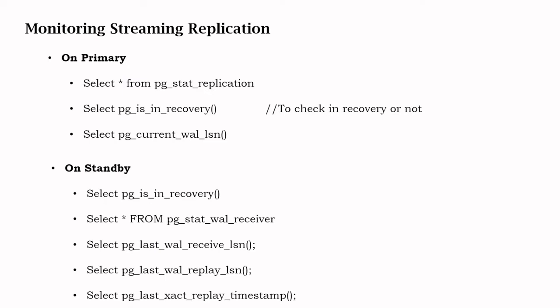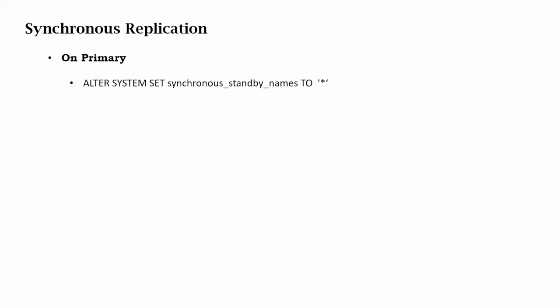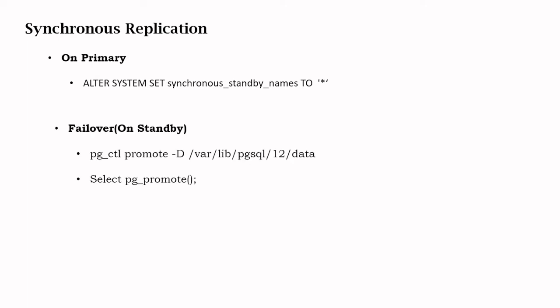There is also a command that gives the timestamp of when the last WAL log was applied. By default Postgres uses asynchronous replication. If you want to convert to synchronous replication you can use ALTER SYSTEM SET synchronous_standby_names to star. The drawback is that if the standby server is not available, the primary has to wait for a specific duration, so change this value only if synchronous replication is truly required.